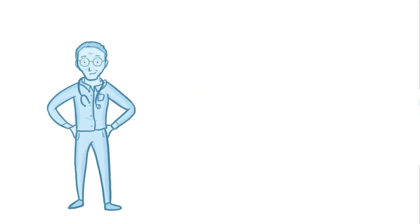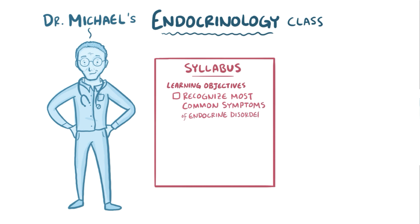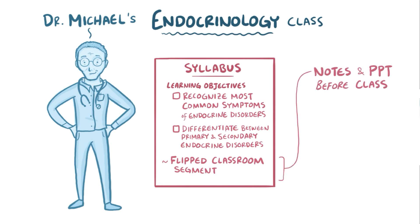To show how this works, let's say that there's a clinical instructor named Dr. Michael who loves teaching endocrinology. He might have learning objectives listed in his course syllabus, things like recognize the most common symptoms of endocrine disorders, or differentiate between primary and secondary endocrine disorders. The syllabus might also list out specific flipped classroom segments in his course, like one in which he provides his students with his notes and PowerPoint slides so that they can review beforehand, and then come prepared to discuss a case about precocious puberty.